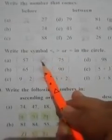Next, part nine: Write the symbols greater than, less than, or equal in the circle. Part A: 57 and 75. 75 is the bigger number, 57 is smaller. So 57 is less than 75.